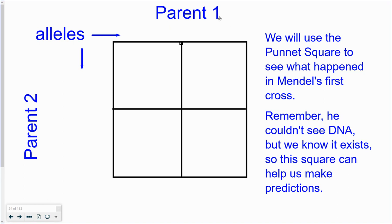So we take a Punnett square and we put one parent's alleles up here and one parent's over here. This is the most basic Punnett square.